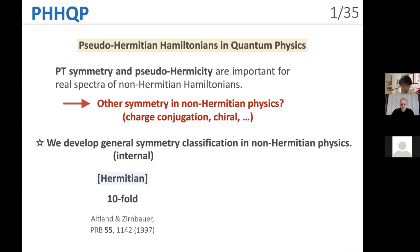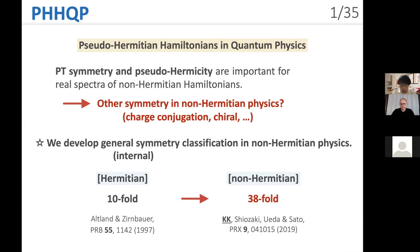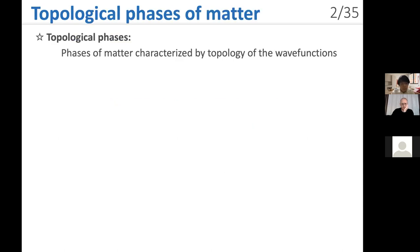In Hermitian physics, internal symmetry is generally classified by the celebrated tenfold symmetry class by Altland and Zirnbauer. We show that non-Hermiticity changes the nature of symmetry and leads to 38-fold symmetry classes — this is the general symmetry classification in non-Hermitian physics and one of our main results. Another main subject of this talk is topology. The last decades have witnessed the significance of topological phases, which are phases of matter characterized by topology of the wave functions and cannot be described by conventional Landau theory.